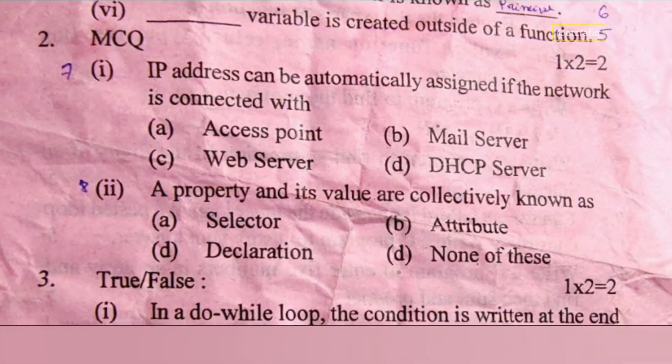Now MCQ, this is just for two marks. IP address can be automatically assigned if the network is connected with - the correct option will be DHCP server. Number two: a property and its value are collectively known as - it will be declaration.